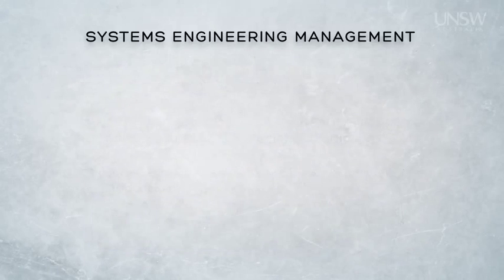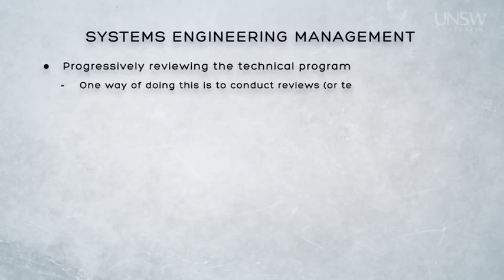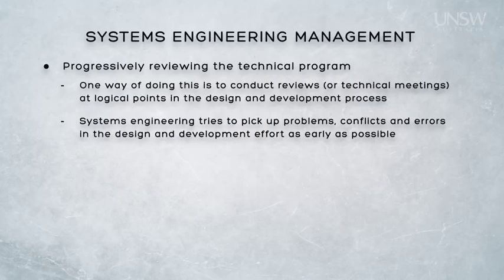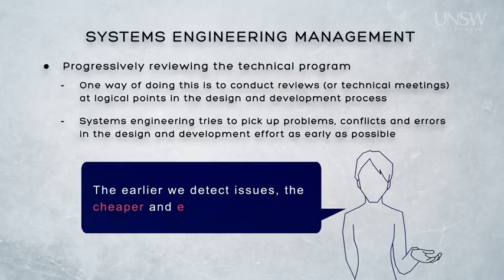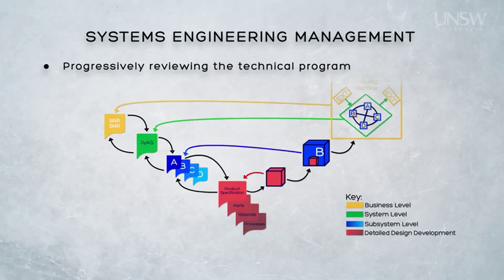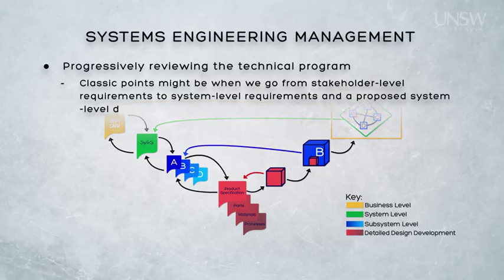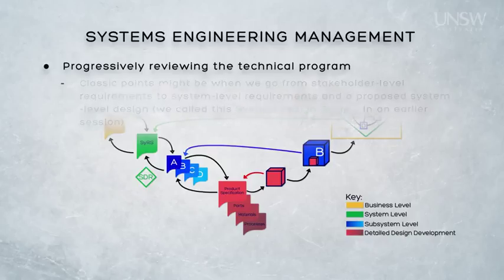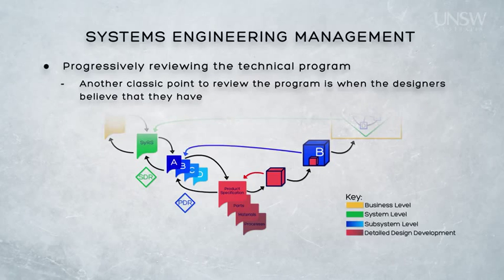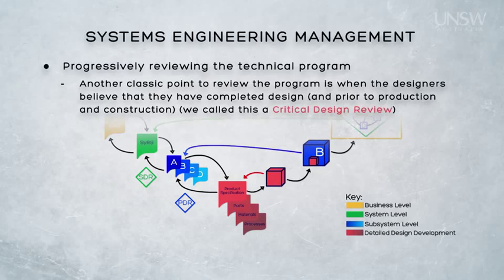Throughout this course we have discussed the idea of periodically reviewing our work at logical points in the design and development process. This is an effective way of detecting errors, conflicts and problems with our design as early as possible. After all, we know that the earlier we detect issues, the easier and cheaper they are to rectify. In this course, we are suggesting reviewing things after major transitions. For example, we spoke of a system level review called the system design review when we transitioned from stakeholder to system level requirements. We suggested a subsystem level review called the preliminary design review, and we also suggested a detailed design review called the critical design review when the designers believed that they had completed the detailed design of the system.